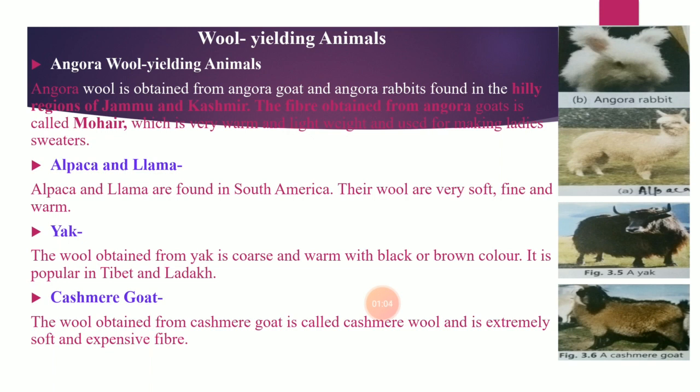Alpaca and llama both belong to the camel family, found in South America. Their wool is very soft, fine, and warm. Yak's wool is very popular in Tibet and Ladakh — the wool fibers are coarser and warmer, and the wool color is black or brown. Kashmiri goat produces Kashmiri wool, which is extremely soft and very expensive.